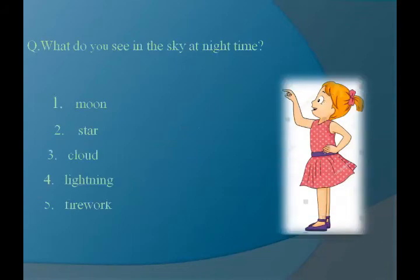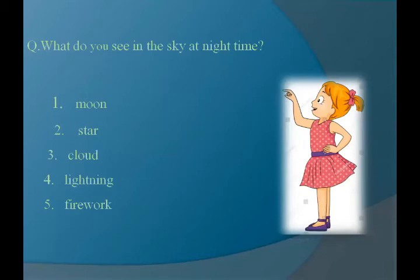Now, what do you see in the sky at nighttime? The first is moon. The spelling of moon is M-O-O-N, moon. We see moon in the sky at nighttime. We cannot see moon in the sky at daytime.